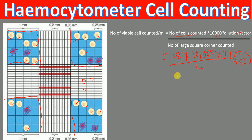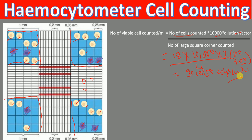So when we perform the calculation for live cells — 18 multiplied by 10,000 multiplied by 2 divided by 4 — we will have 90,000 cells per mL.